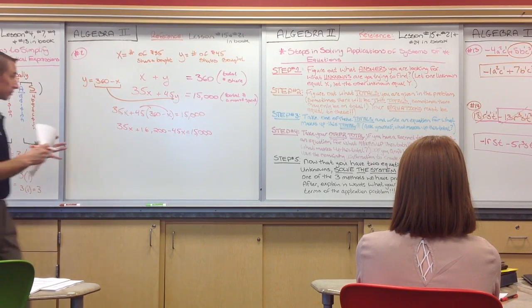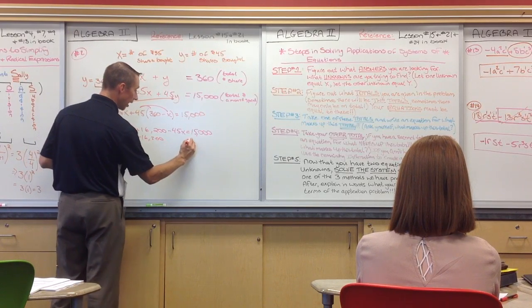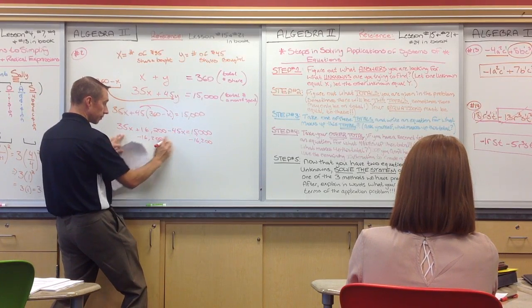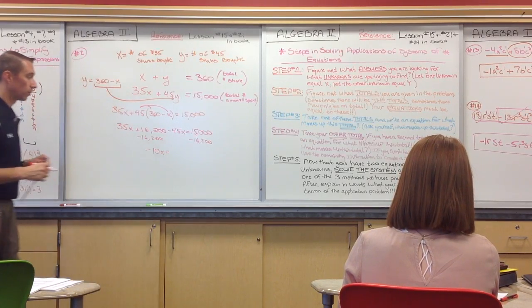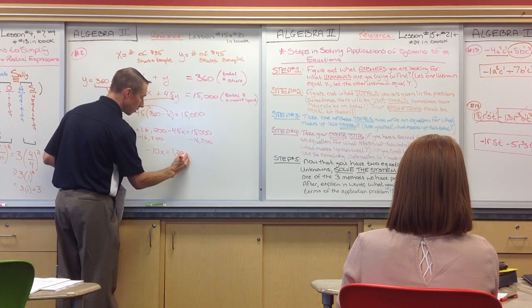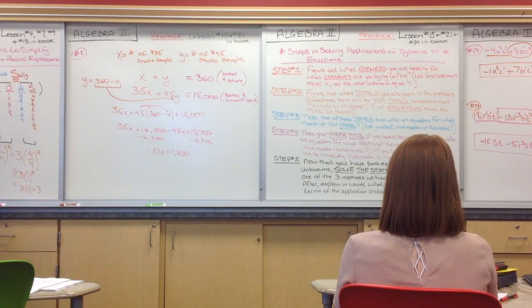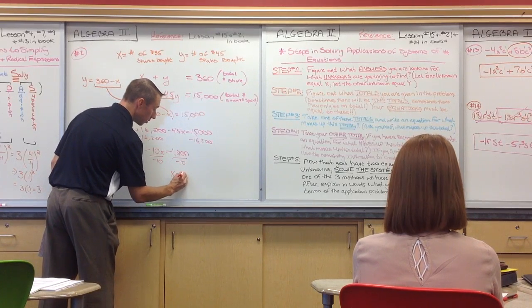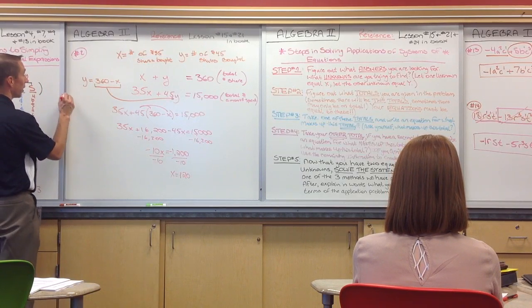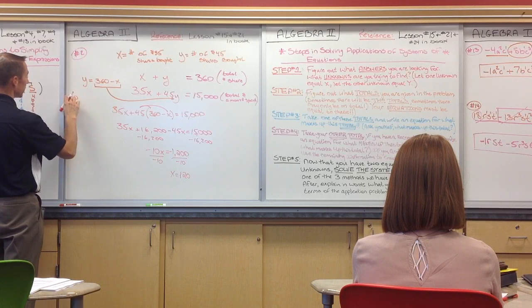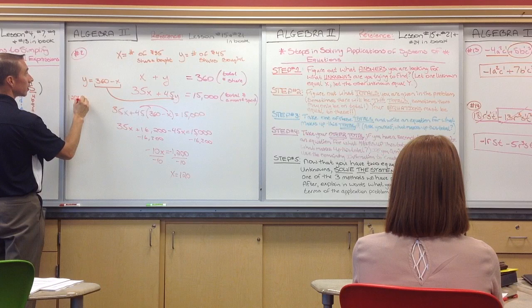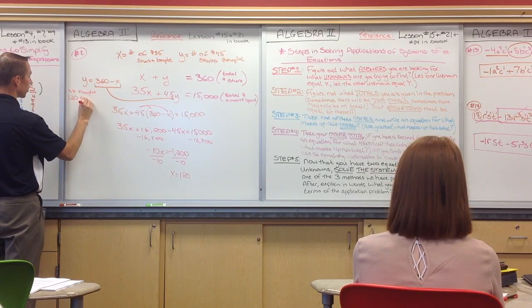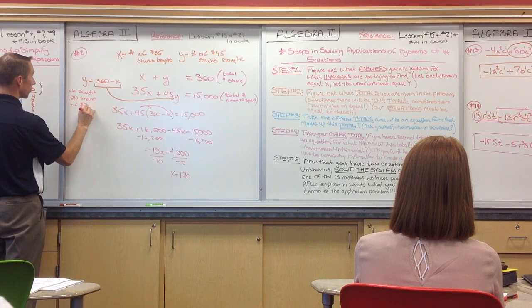Now, what do we have to do? Subtract the 16,200 and then collect like terms. So, if we collect these, what do we get? Negative 10X is equal to negative 1,200. Now, what do we do? Divide by negative 10. X is equal to 120. That means that we purchased 120 shares of $35 stock.